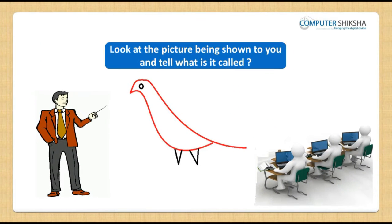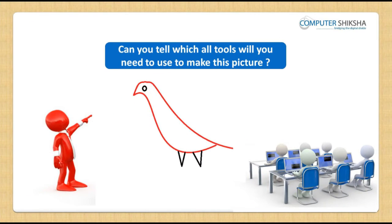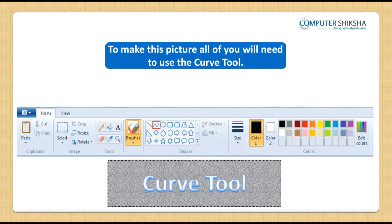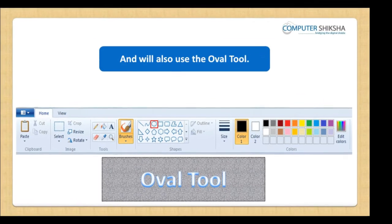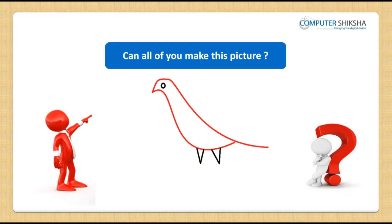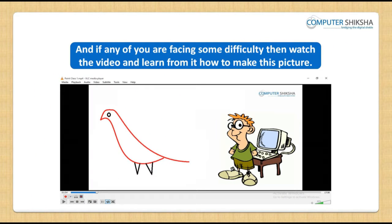Look at the picture in front of you and tell what it is called. This is a picture of a bird. Can you tell which tools you will need to use to make this picture? To make this picture, you will need to use the curve tool and also the oval tool. Can you all make this picture? If you can, go ahead and show how. If you are facing some difficulty, then watch the video and learn from it.